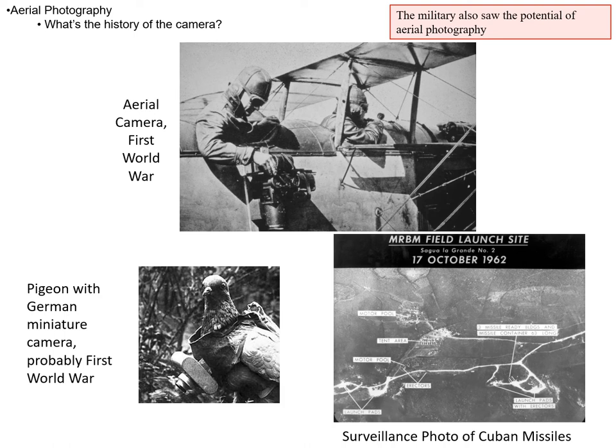This eventually moved into use of airplanes — there you have an aerial camera from the First World War. There was an awful lot of development from the First to the Second World War. During the Second World War there were large-scale mapping missions, not only for looking at troop positions, but for getting terrain and finding paths for airplanes to go from one area to another. And at the lower right is a surveillance photo of Cuban missiles taken during the Cuban Missile Crisis, which allowed the presence of the missiles to be verified, and then the removal of the missiles to also be verified.